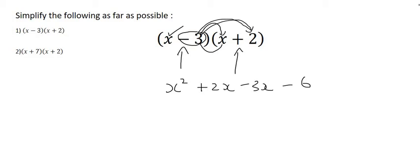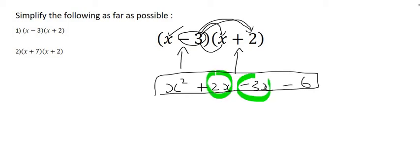What we now do is we scan across these four terms, and we see if there are any like terms. Well, yes there are. 2x and 3x are like terms, and so positive 2x minus 3x is, well what's 2 minus 3? Well that's minus 1. So that's going to be x squared minus 1x minus 6, and that's the answer for that first one.